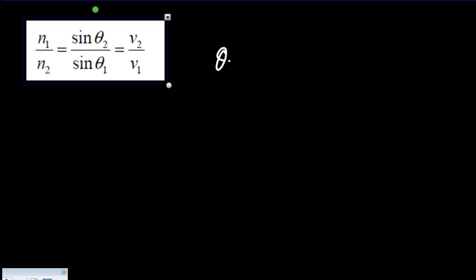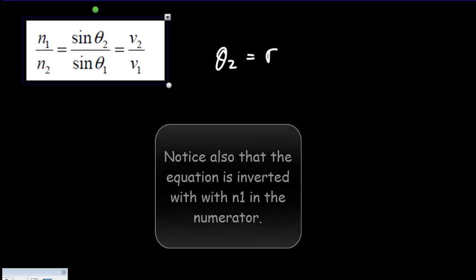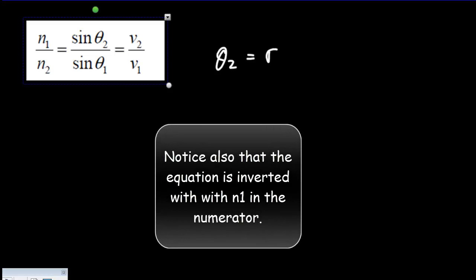The way the IB writes it is using θ2 for the angle of refraction and θ1 for the angle of incidence.